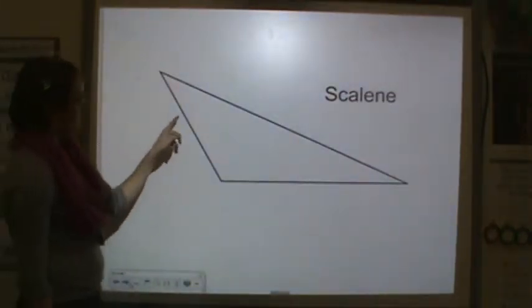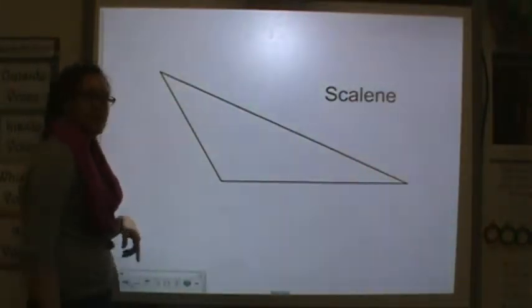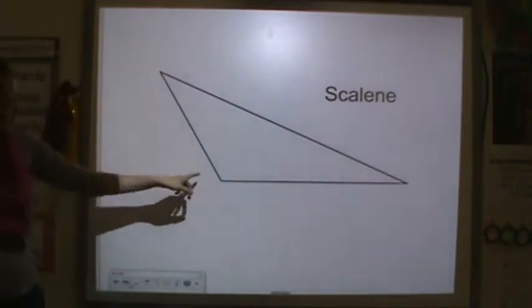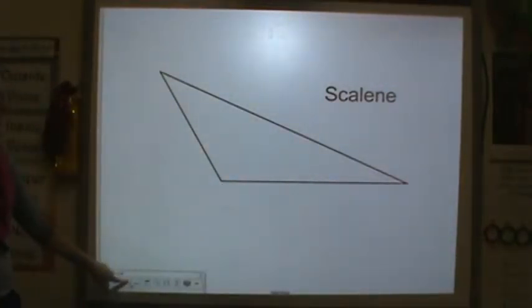A scalene triangle. You can see none of these sides are the same length. So this is scalene and you have here an obtuse angle.